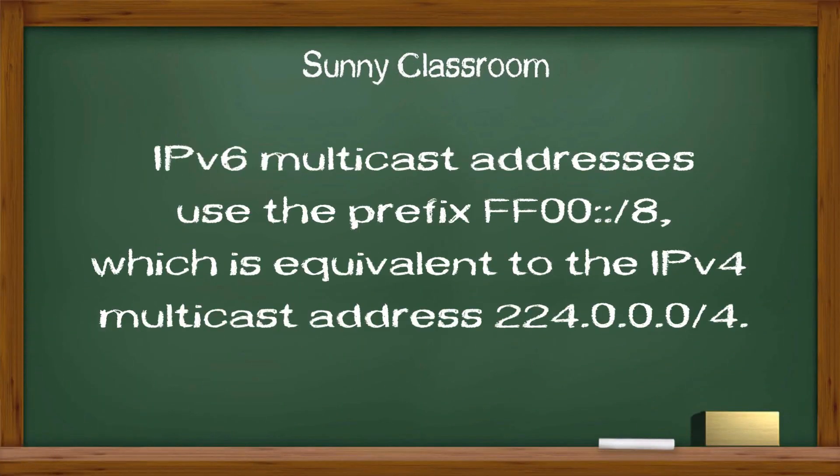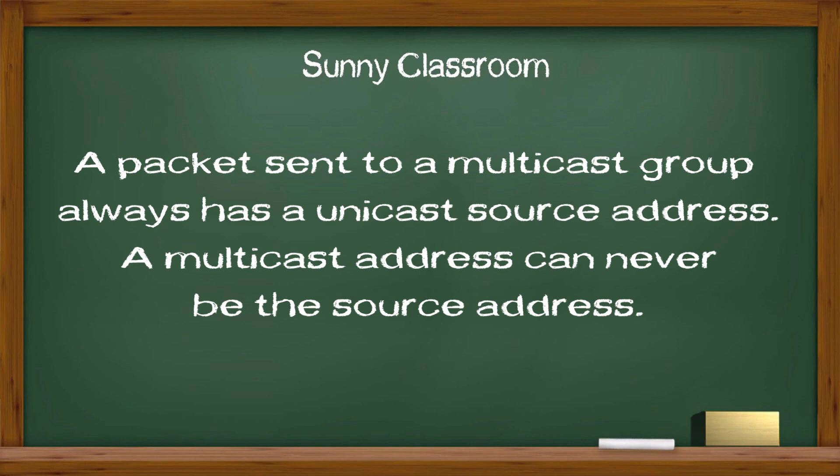IPv6 multicast addresses use the prefix ff00::/8, which is equivalent to the IPv4 multicast address 224.0.0.0/4. A packet sent to a multicast group always has a unicast source address. A multicast address can never be a source address.